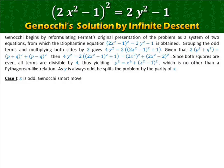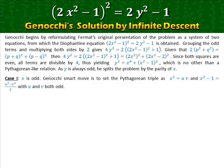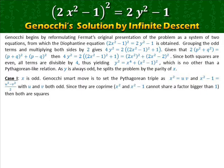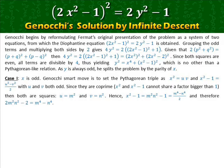Genocchi's smart move is to set the Pythagorean triple as x² = uv and x² − 1 = (u² − v²)/2, with u and v both odd. Since they are co-prime, x² and x² − 1 cannot share a factor bigger than one, so both are squares: u = m² and v = n². Hence x² − 1 = m²n² − 1 = (m⁴ − n⁴)/2, and therefore 2m²n² − 2 = m⁴ − n⁴.